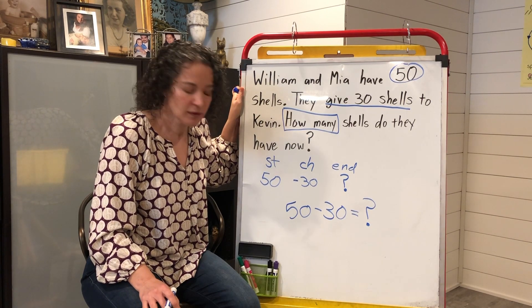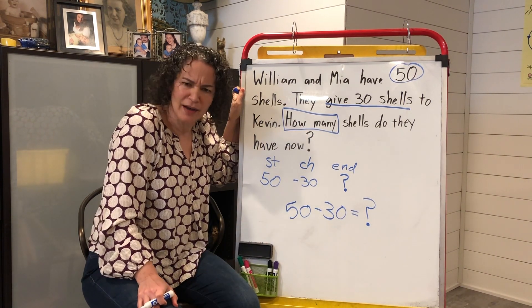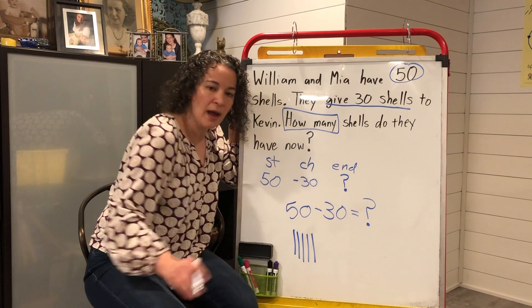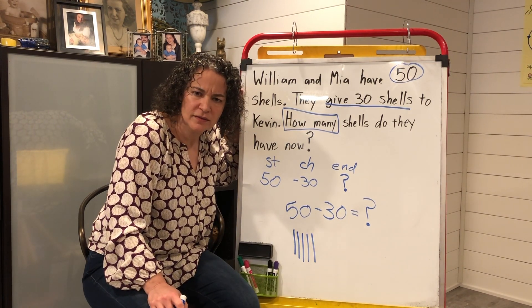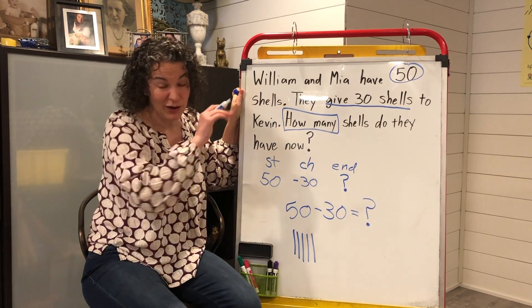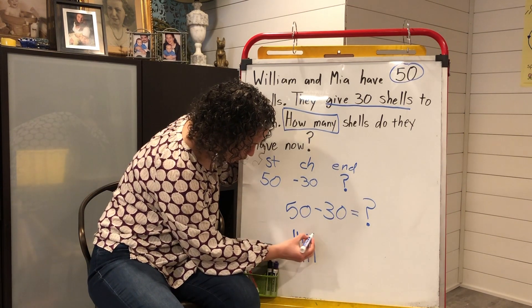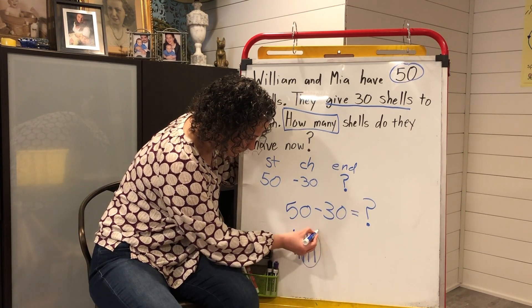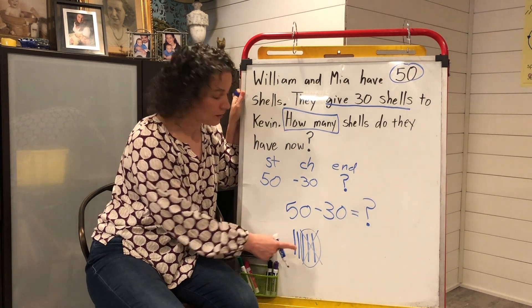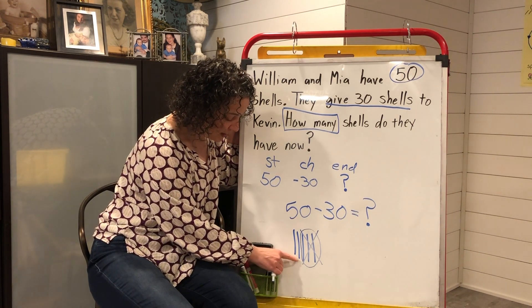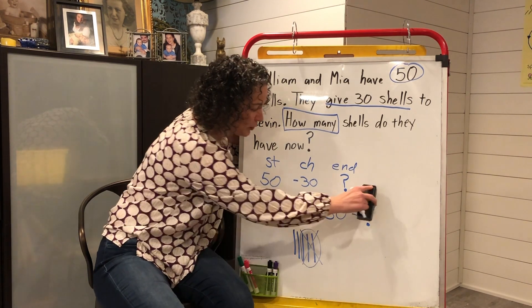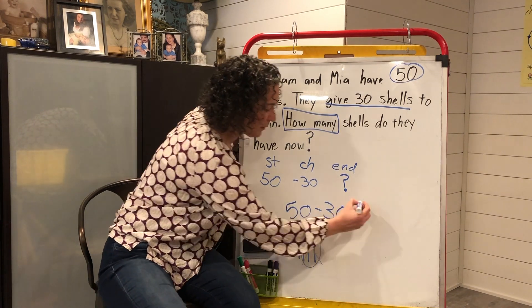Let's do the quick pick. 50 — how many 10 rods? Five. 10, 20, 30, 40, 50. And how many am I going to cross out? Three, because 30 is three 10s. Cross out three 10 rods. How many 10s am I left with? Two 10s. Count with me: 10, 20. So I'm going to erase my question mark and write 20 — our difference is 20.